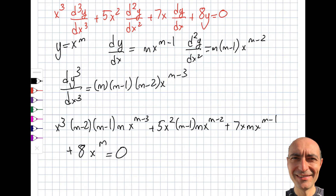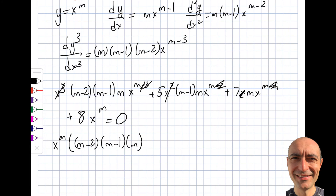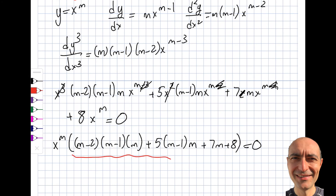So for the third-order terms, I can take everything with x^m as the common multiplier for each term. So I'll get m(m−1)(m−2) plus 5·m(m−1) plus 7m plus 8, all times x^m, equal to zero. I'll say x^m is not zero, so I set the other factor equal to zero.